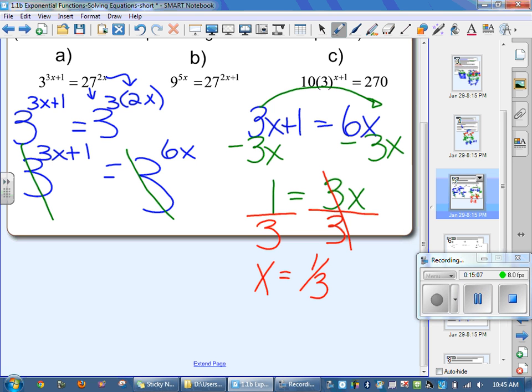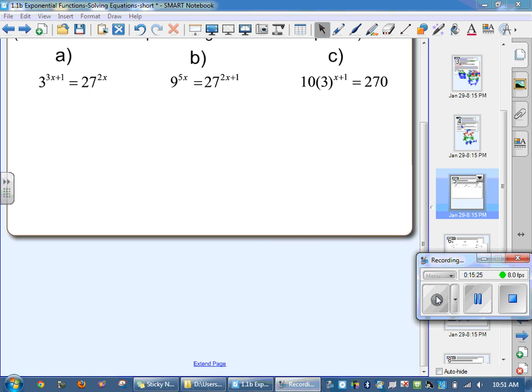I want you guys to try b. With b, we have to change both of them. The 9 has to go to 3 squared. And the 27 has to go to 3 cubed. You guys try b. Let's take a look at 9. 9 will go into a base 3. So we have 3 squared. And then we put our 5x on. The 27 goes into 3 cubed.